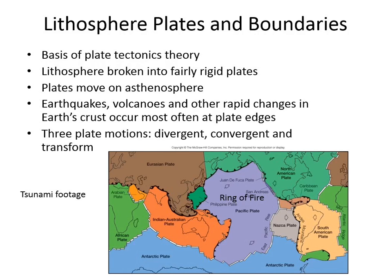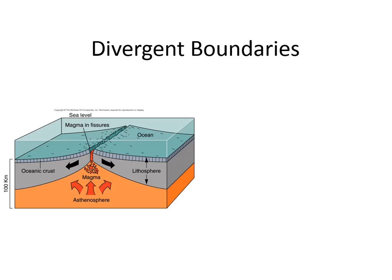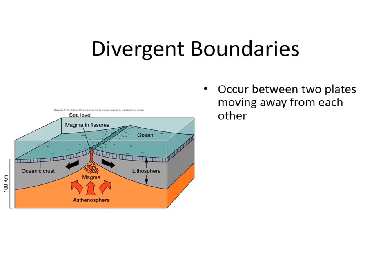Diverging with a D — that actually created the seafloor spreading that creates our Mid-Atlantic Ridge. We can also have plates that are coming together, and we call that converging plates. And then transform must be maybe the side-to-side. Diverging plate boundaries create our Mid-Atlantic ridges.